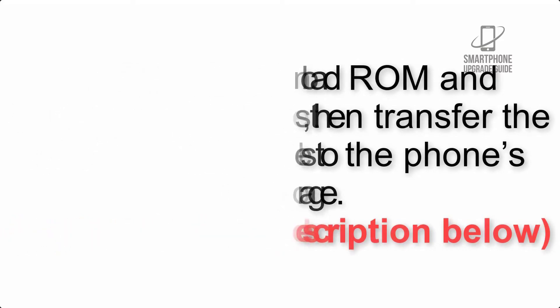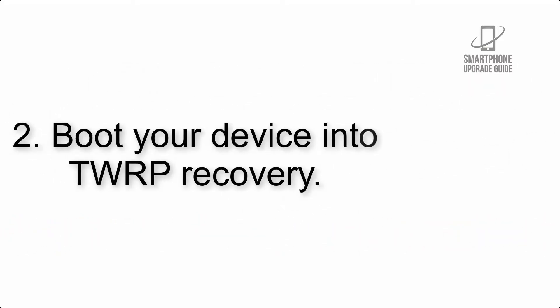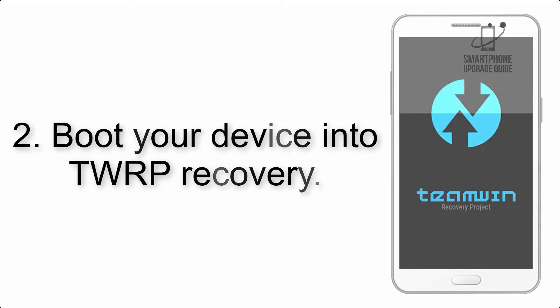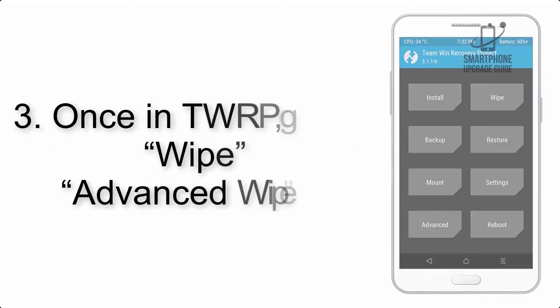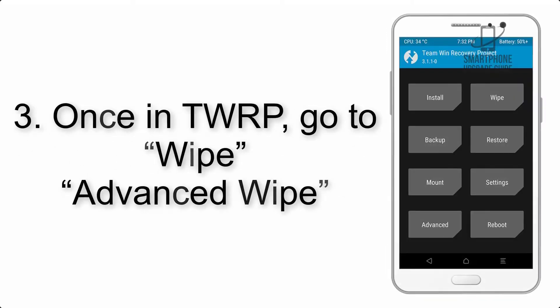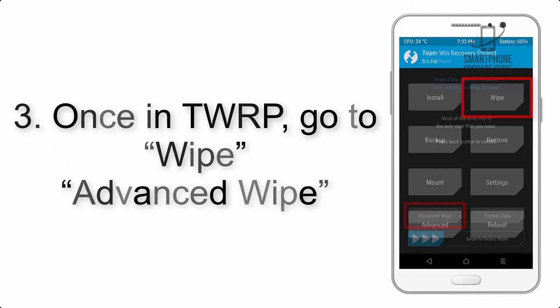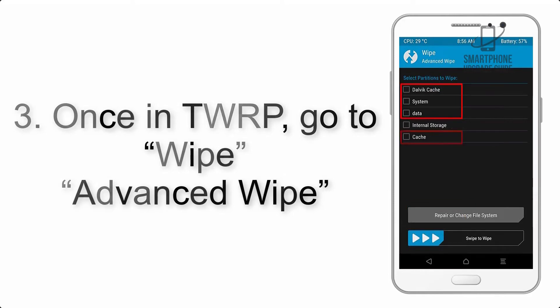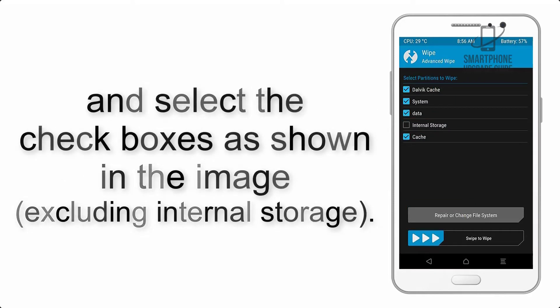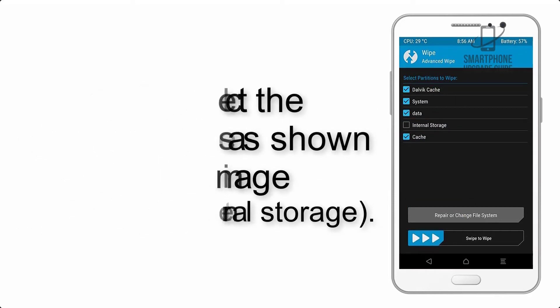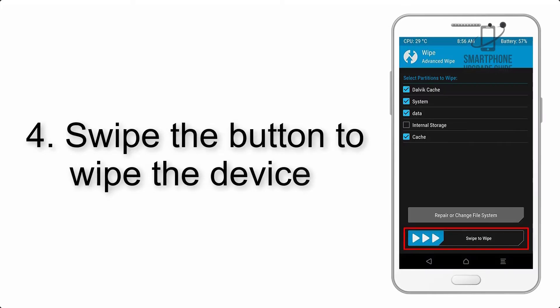Step 2: Boot your device into TWRP recovery. Once in TWRP, click on Advanced Wipe and select the checkboxes as shown in the image, excluding internal storage. Step 4: Swipe the button to wipe the device.